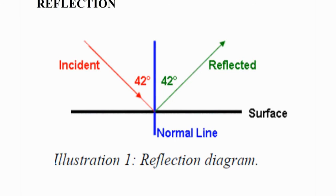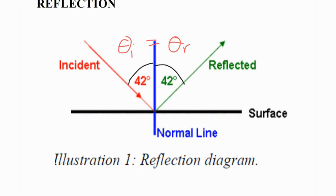The other thing that light does is it reflects. This isn't really unique to waves — we know particles reflect as well. But we're going to look at how light reflects. This is the law of reflection: the angle of incidence is equal to the angle of reflection. The angle that light hits a reflective surface is the same angle at which it's reflected. It's important to understand that we measure from the normal line.